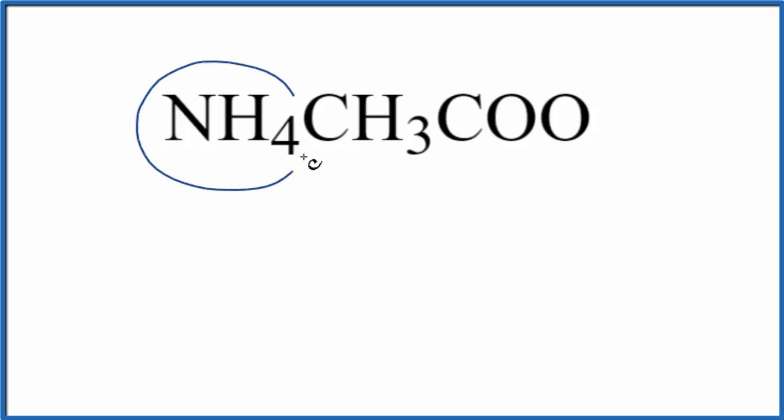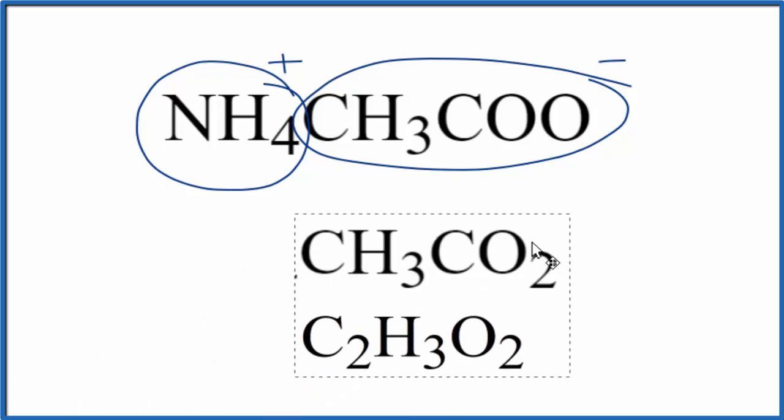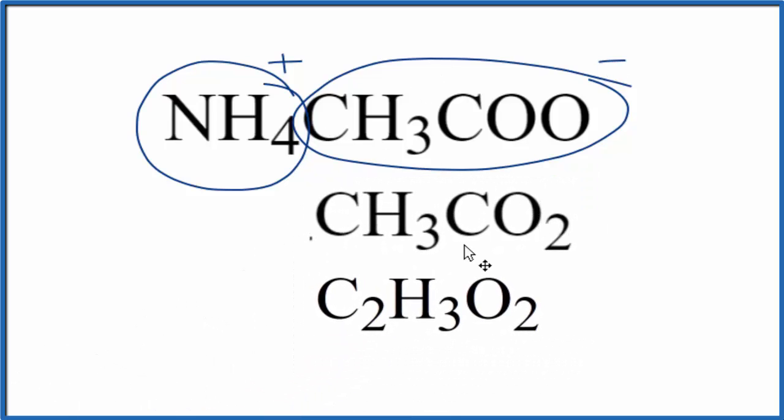We have the ammonium ion, NH4, that has an ionic charge of 1 plus, then the acetate ion here. This whole thing has a charge of 1 minus. And sometimes the acetate ion will be written like this here. Each one of these would have a 1 minus charge. Same thing, just organized a little bit differently. So in this video we're going to write the acetate ion as CH3COO-.